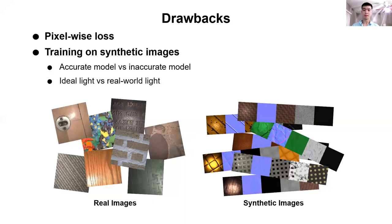Moreover, synthetic images are rendered under ideal light sources, while the real images are captured under flashlight and unknown additional lighting. Noise and other imperfections further complicate the problem. Therefore, the network trained with synthetic images cannot be effectively generalized to real examples.